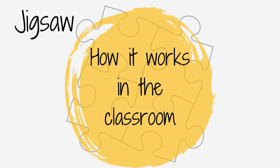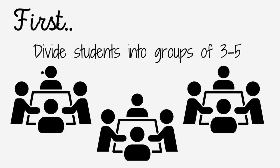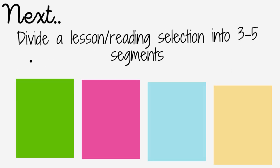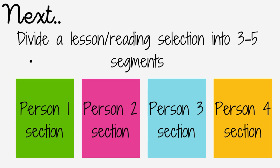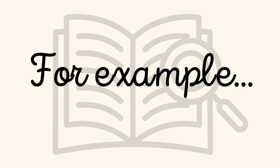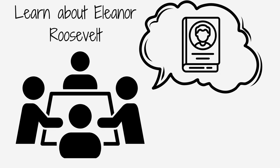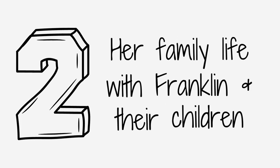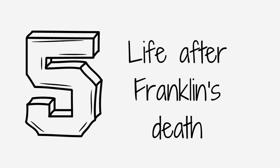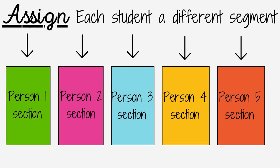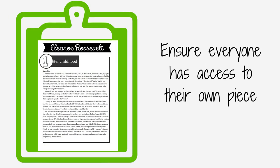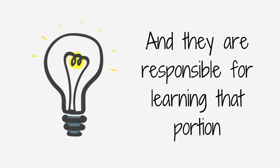Let's take a look at how Jigsaw works in the classroom. First, divide students into a 3-5 person group. Next, divide a lesson, a reading selection, or another source of material into 3-5 segments. For example, if you want students to learn about Eleanor Roosevelt, you might divide a short biography of her into stand-alone segments on: 1. Her childhood, 2. Her family life with Franklin and their children, 3. Her life after Franklin contracted polio, 4. Her work in the White House as First Lady, 5. Her life and work after Franklin's death. Assign each student to learn one segment. Make sure students have direct access to their own piece, ensuring all students know that they are responsible for learning that portion.